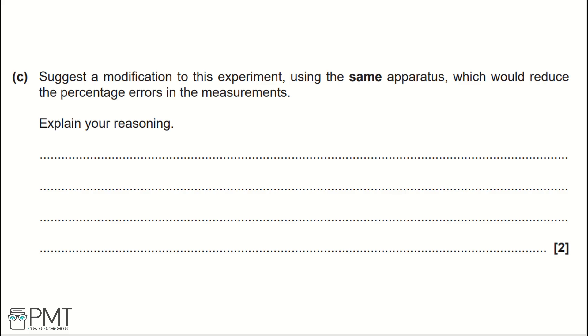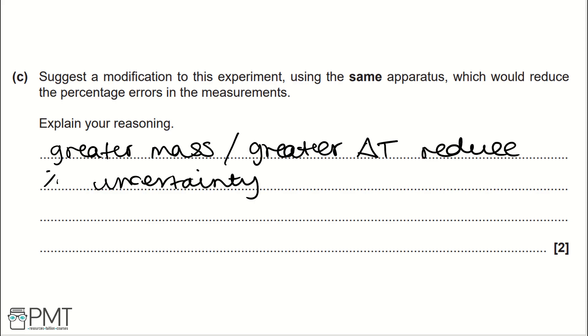Again, this is a very common two-mark question to do with mass PAGs. The set answer that you should learn is a greater mass. You could also use a greater temperature change. Both would reduce percentage uncertainty. And the reason for this is because if you have a larger denominator, that will reduce the number that you end up with. And a greater mass and a greater temperature change will be the denominators when working out percentage uncertainty. And so, they will reduce the percentage errors if you have a greater mass or temperature change. In this question, you get a mark for saying greater mass and a mark for saying greater temperature change.